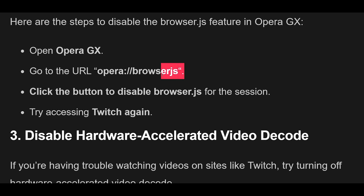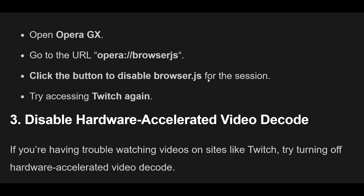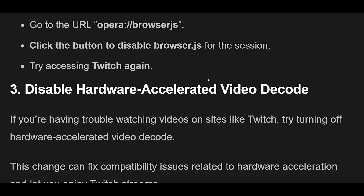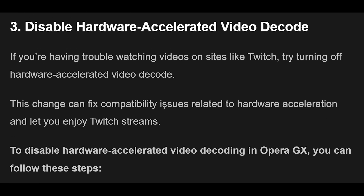Open Opera GX. Go to the URL opera://browserjs and click the button to disable Browser.js for the session. Try accessing Twitch again.